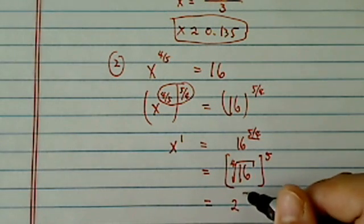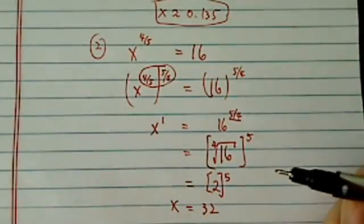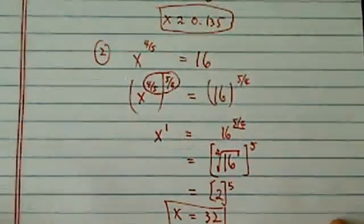This one happened to be 2 to the fifth, so equals 32. So x equals 32. That's the answer.